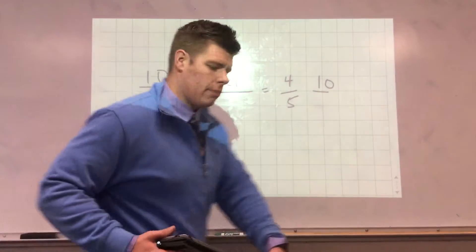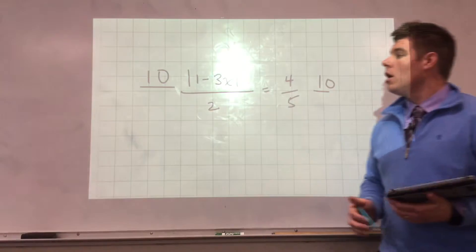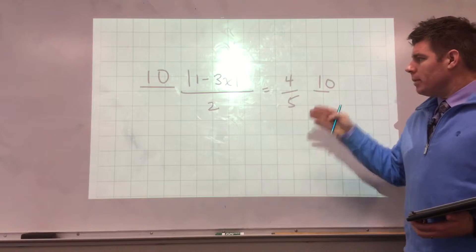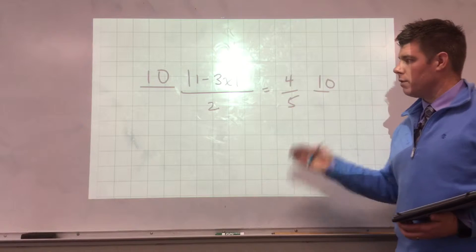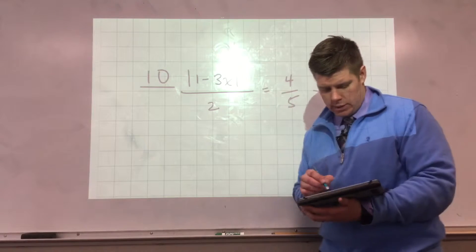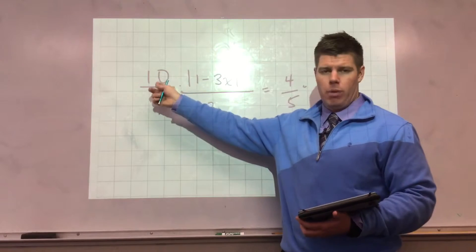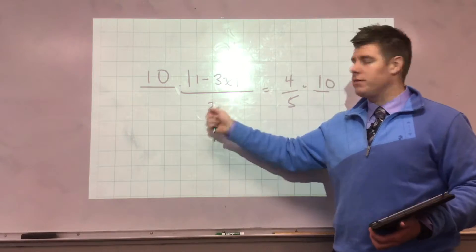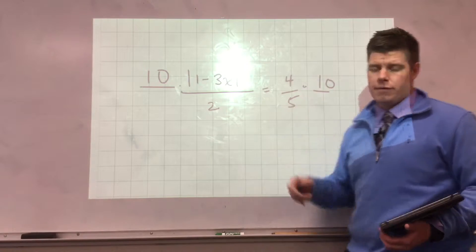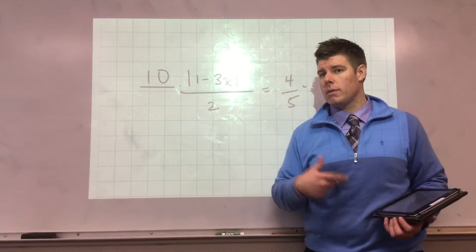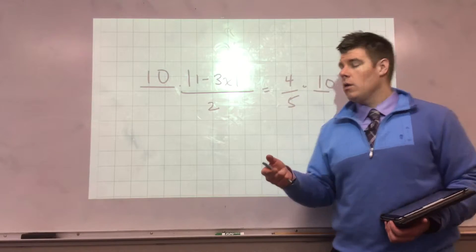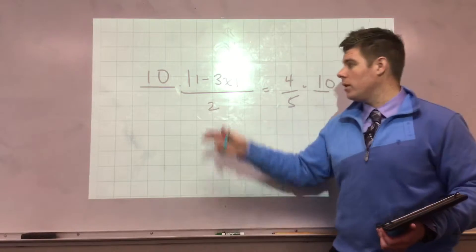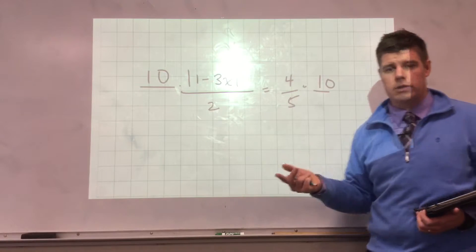This video deals with the question: should I clear a fraction out when I have an absolute value? For this particular video, there is a reason why you don't. This is linked to another video where I'm multiplying by 10 because I'm looking at the least common denominator of 2 and 5 — what number can both 2 and 5 divide? That number is 10, since 10 divided by 2 and 10 divided by 5 are both integers.